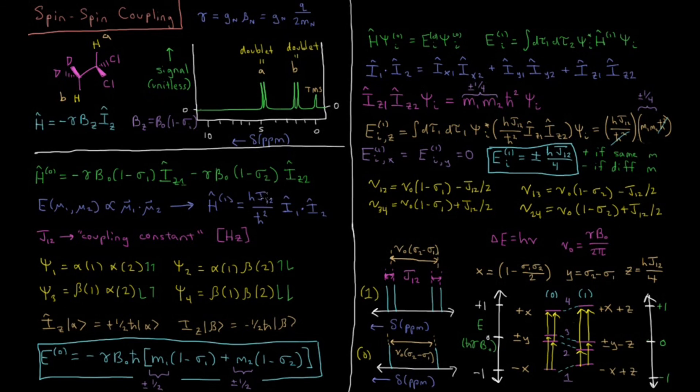This works formally for all the protons in the molecule, but j12 becomes very, very small once these are separated by more than, say, three or four bonds. So it would take a very strong spectrometer to be able to resolve the coupling constant of protons which are separated by more than just a few chemical bonds from one another.